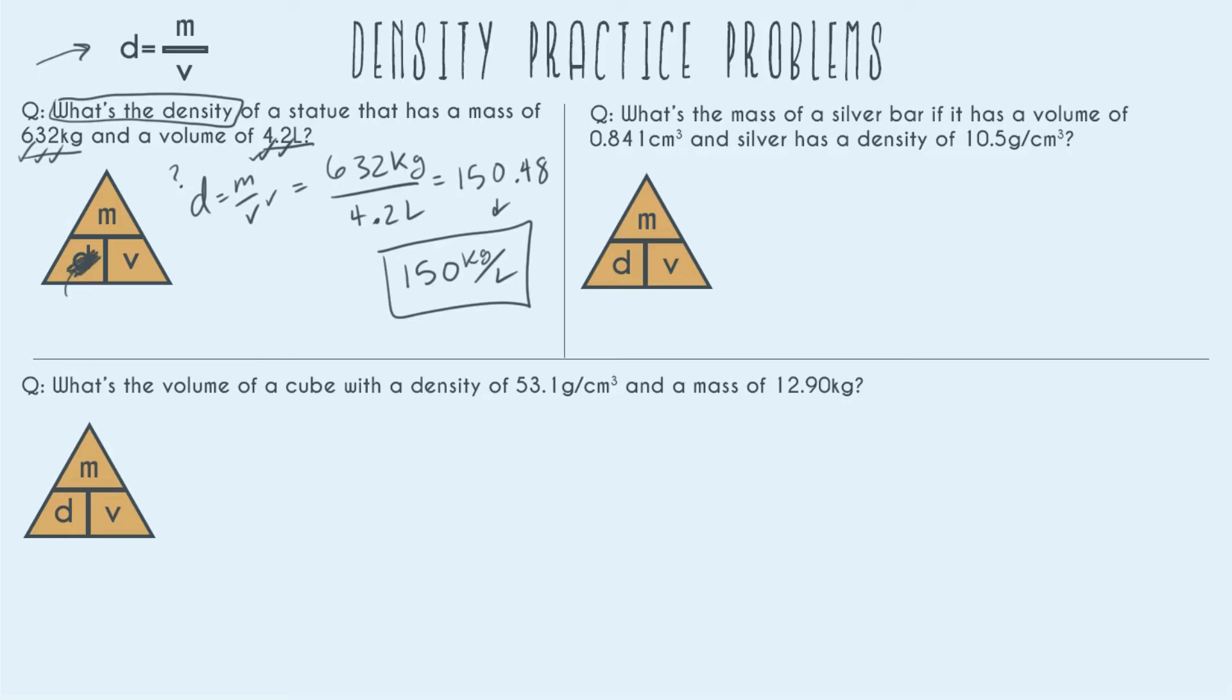And so the way that it works is that whatever you're solving for you go ahead and you cross out. So in this case we're looking for density so we just go ahead and cross it out and then the rest of the pyramid reveals to you what the formula should be. So we can see it looks like M divided by volume, so we can see that this line in the middle represents division and then we can see on the numerator it's going to be mass, on the denominator it's going to be volume and so that will end up with the same formula we end up using.